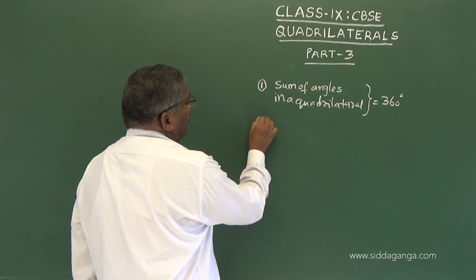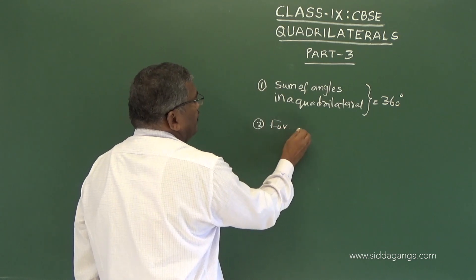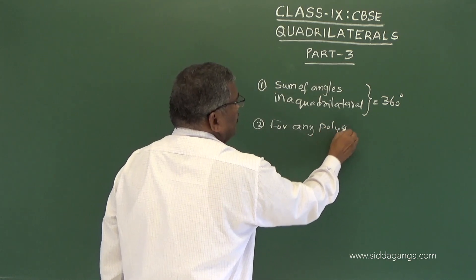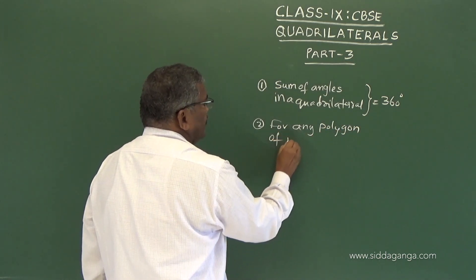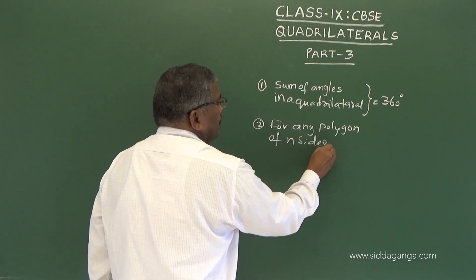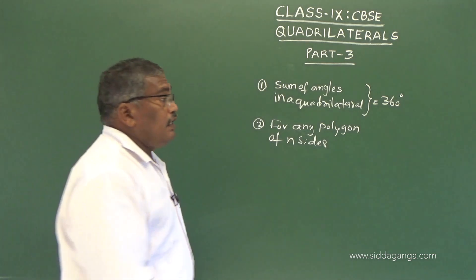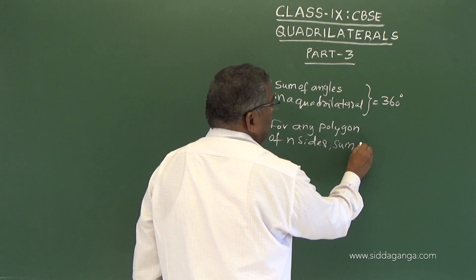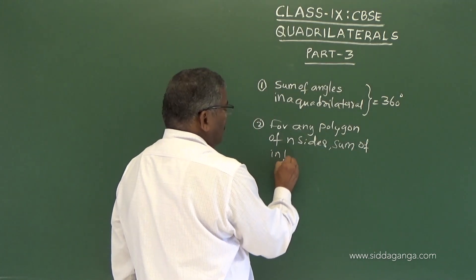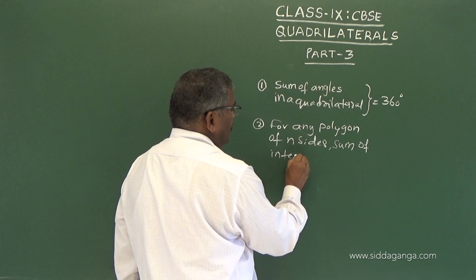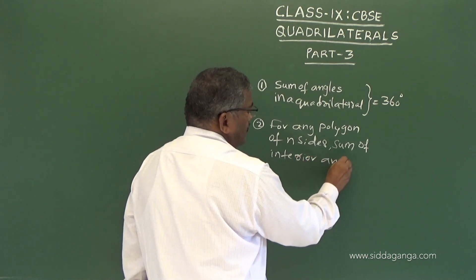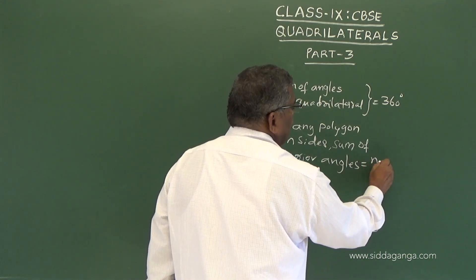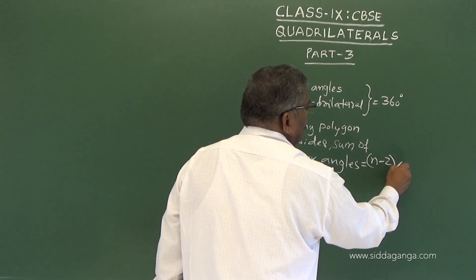In general, for any polygon of n sides, the sum of interior angles is equal to n minus 2 into 180 degrees.